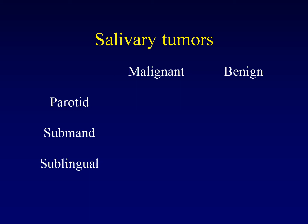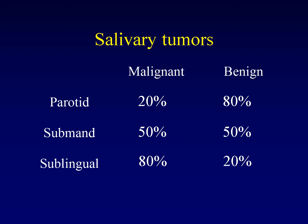The most common tumors that arise in the glands depend on which gland you're talking about. The vast majority of tumors arising in the parotid gland are benign — only 20% are malignant and 80% are benign. In the submandibular gland it's more even: half are malignant and half are benign. Once you get to the smaller sublingual glands and the minor salivary glands, that ratio reverses and 80% are malignant, but only 20% are benign.